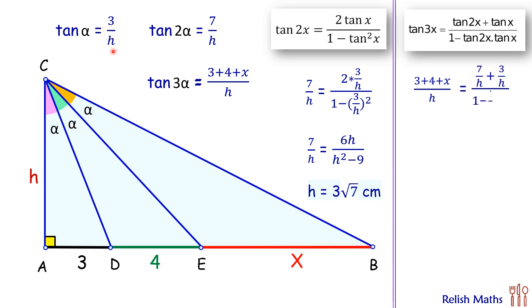Now in this equation, simplifying the RHS, we'll get RHS as 10h upon h² minus 21. Solving this equation, this h will go on the other side, so it becomes 10h², and here this plus 7 will become minus 7.